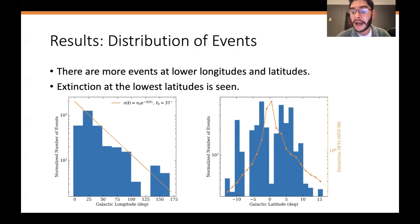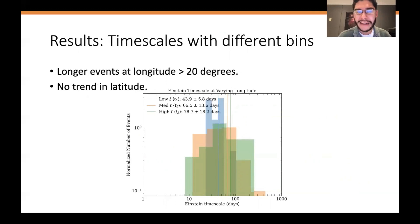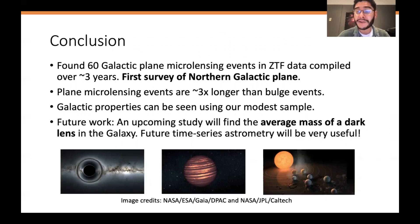Looking at the same plot as a function of galactic latitude, there is indeed a drop-off of events at higher and lower galactic latitudes, but there's a noticeable lack of events at zero galactic latitude, which is an independent probe of extinction at the plane of the galaxy — it's simply difficult to detect events because there's so much dust in the way. There are longer events as expected at longitude greater than 20 degrees, and there's no trend in latitude in our current dataset.